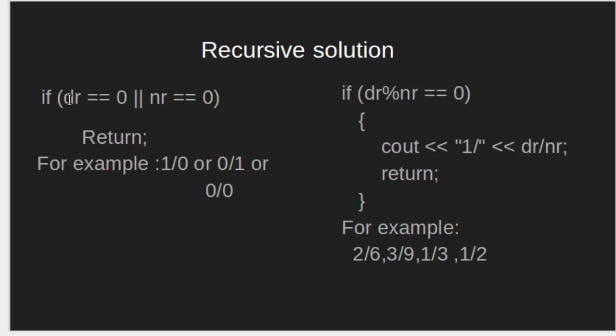Now, this is checking whether numerator or denominator is 0. For example, 1 by 0 or 0 by 1 or 0 by 0 should be discarded and should not return any value as these are not valid positive fractions.